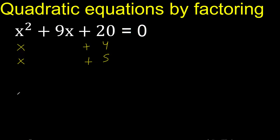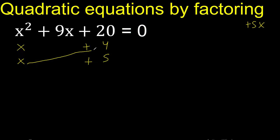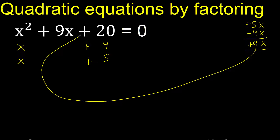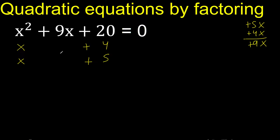Let's analyze if it is correct: x multiplied by plus 5 here, now x multiplied by plus 4 here. That gives 9. Equal — therefore it is correct.